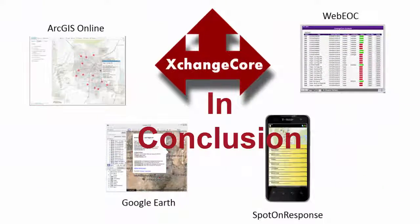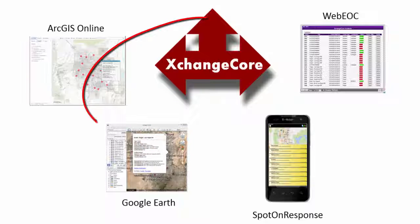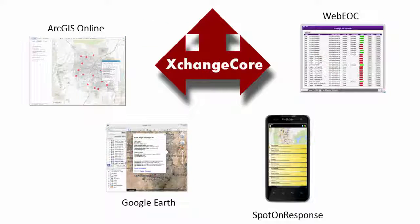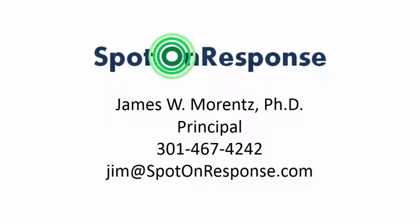So Exchange Core sits between CalEOC, ArcGIS Online, supports Google Earth, as well as other applications like the Spot on Response mobile app. All this has been made possible by the efforts of the California Earthquake Clearinghouse and the contract between Cal OES and Spot on Response. For any further information on this project, please contact Jim Morantz.